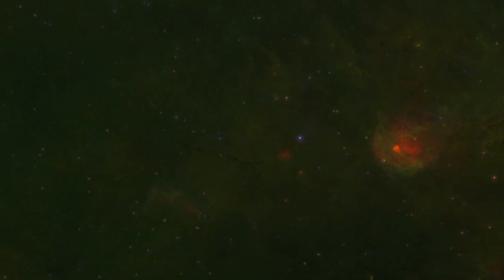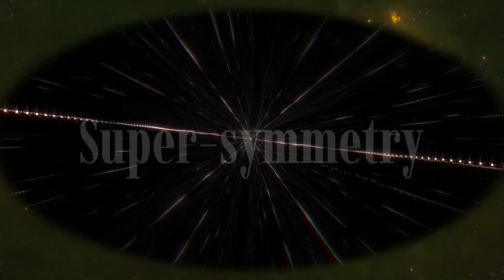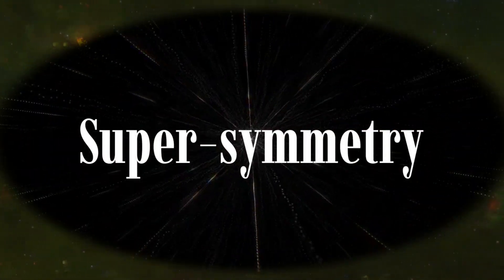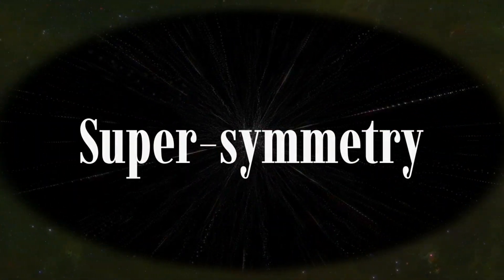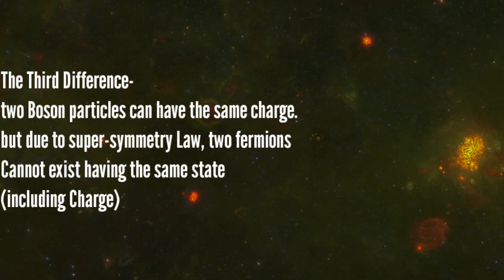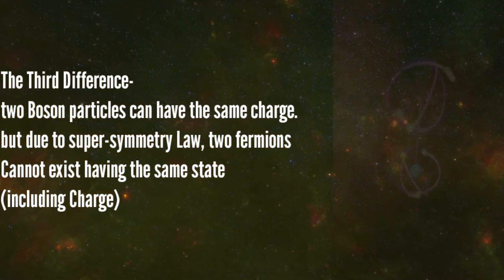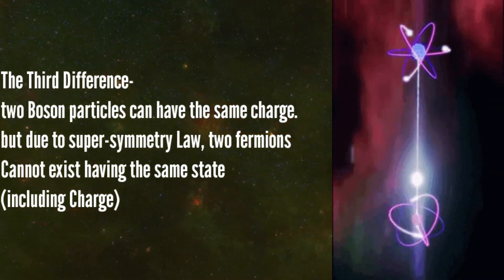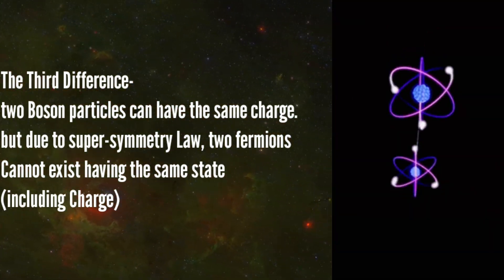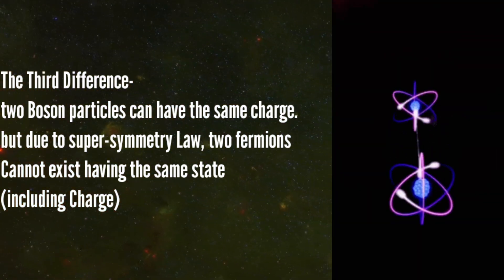Speaking of charge, the third difference can be referred to a case called the supersymmetry principle. According to this principle, two particles, mostly fermions, cannot exist having the same quantum state. These two pairs of particles are connected, but at least one of them should have different charges or a negative spin.